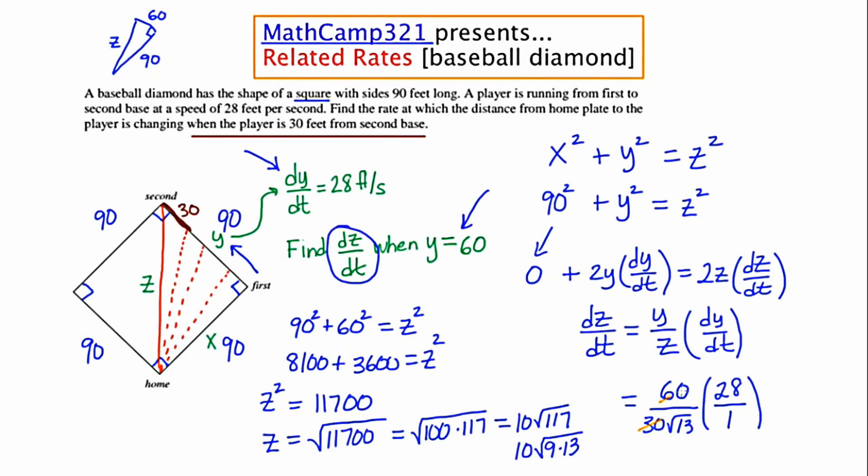Now the 30 and the 60 are going to cross out or reduce and leave me with the number 2. 2 times 28 is 56 and our denominator has that root 13. And then we need to include our units. And if we think back to the problem, it is this distance from the home plate to the player which is growing longer and longer. So that's going to be feet per second. And what we just found to be very clear is dz/dt. The rate at which the distance from the player to home base is changing as that player is running towards second base at a speed of 28 feet per second.